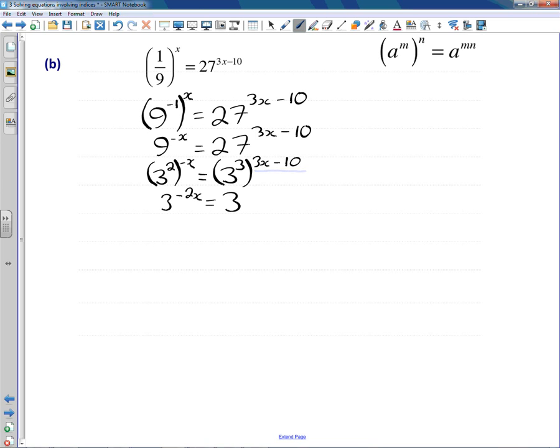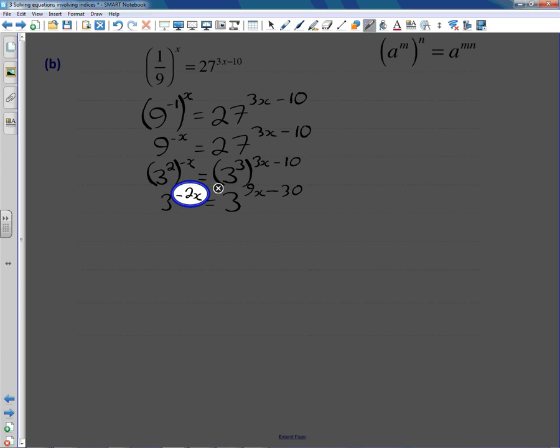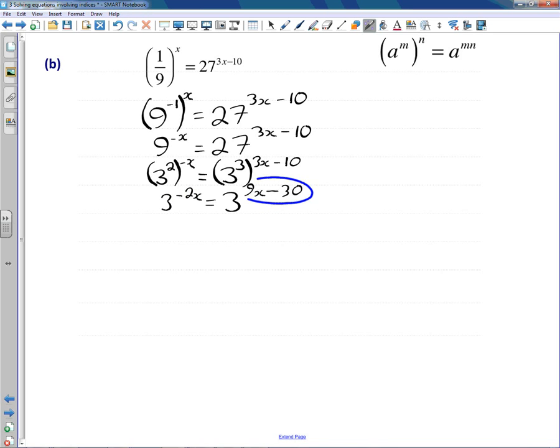So we're going to have 3 raised to the power of 3 times 3x, which is 9x, but also 3 times 10, so 30. And it was actually a positive and a negative, so negative. So now we can make our comparison. This power must be the same as this power.